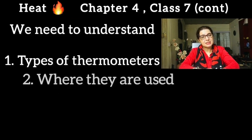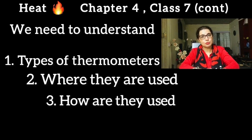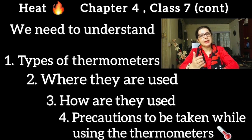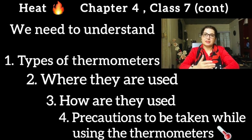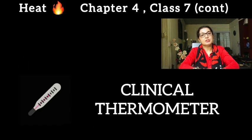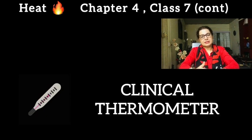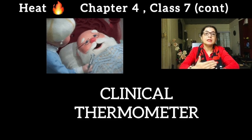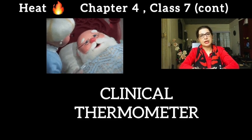This is very important from an examination point of view. We need to understand which thermometers exist, where they are used, how they are used, and what precautions to take. Coming to the first type — the clinical thermometer — which is used to measure the temperature of only human beings. Now, when we take the temperature of human beings, there are certain precautions we need to take.